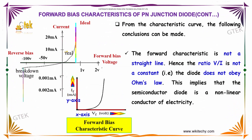From the characteristic curve, the following conclusions can be made. The forward characteristic is not a straight line, hence the ratio of V divided by I is not constant. Therefore, the diode is not obeying Ohm's law. This implies that the semiconductor diode is a non-linear conductor of electricity.